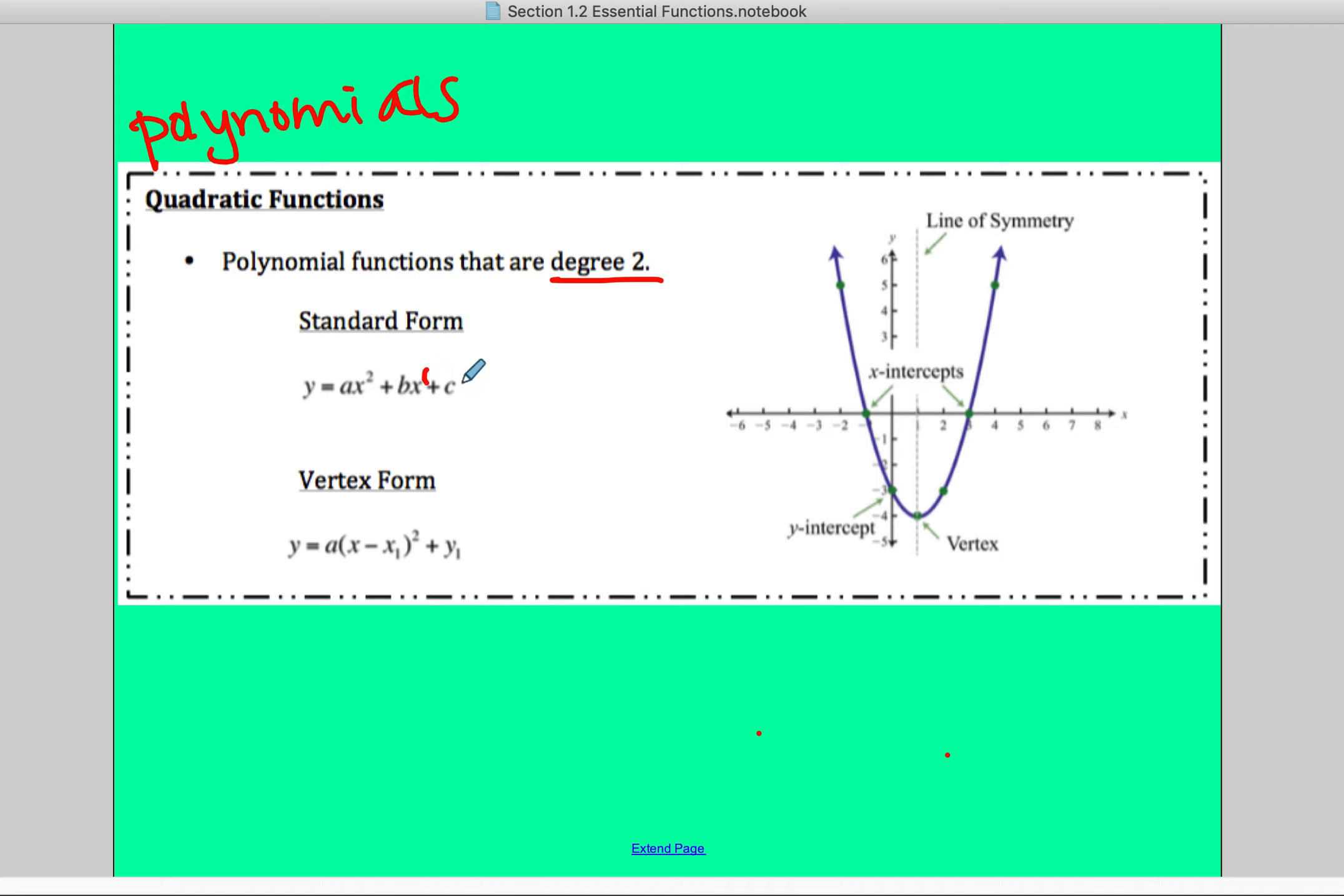We have x squared, x to the first, and then there's no x here, so it's really x to the zero. That's what it means to be in standard form.